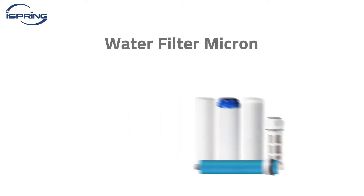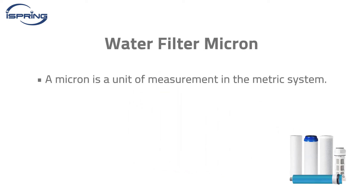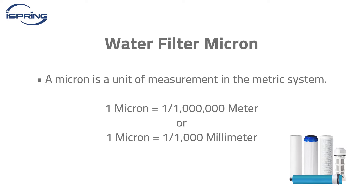Water Filter Micron. A micron is a unit of measurement in the metric system, equal to one millionth of a meter and one thousandth of a millimeter, also known as a micrometer or mu.